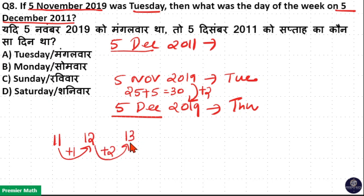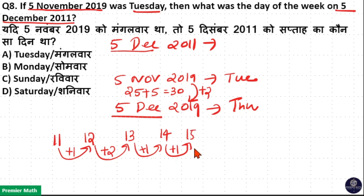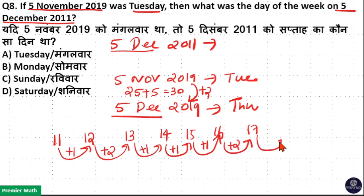2013 is a non-leap year — one odd day. 2014 is a non-leap year — one odd day. 2015 is a non-leap year — one odd day. But 2016 is a leap year, so two odd days. 2017 is a non-leap year — one odd day. 2018 is a non-leap year — one odd day.